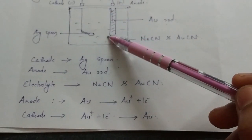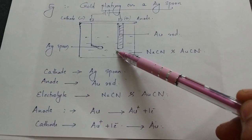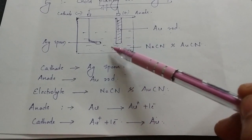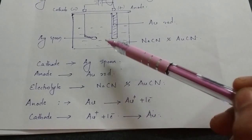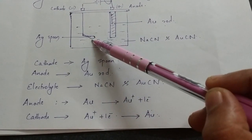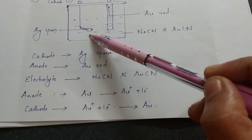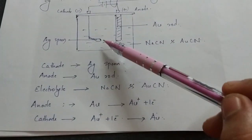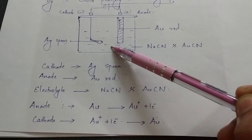As gold atoms are deposited on the silver spoon, the gold anode dissolves into the electrolyte to compensate. This deposition process continues until the desired thickness of gold is deposited on the silver spoon. This completes the first example.